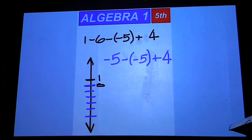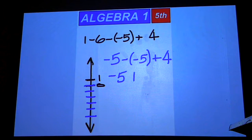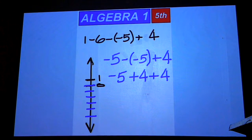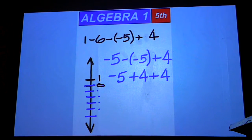That minus a negative 5 changes to plus. We're going to go back up from negative 5, 1, 2, 3, 4, 5. That puts us at 0.